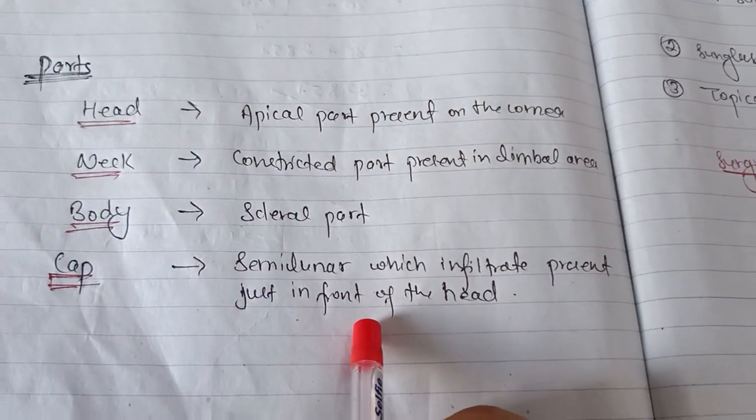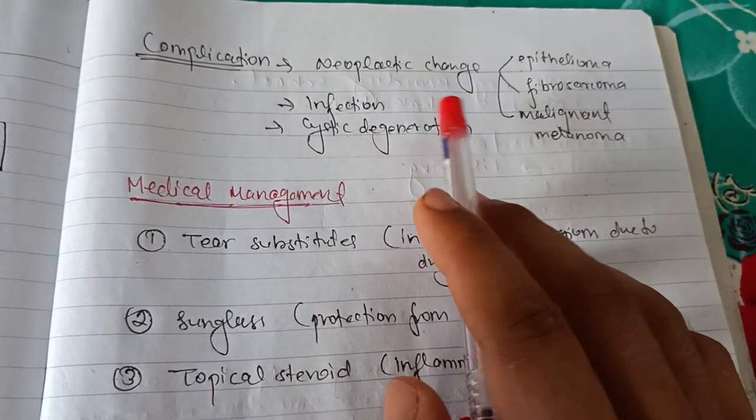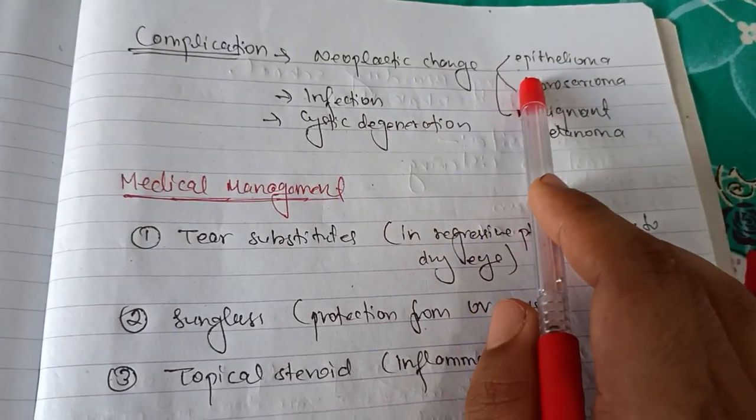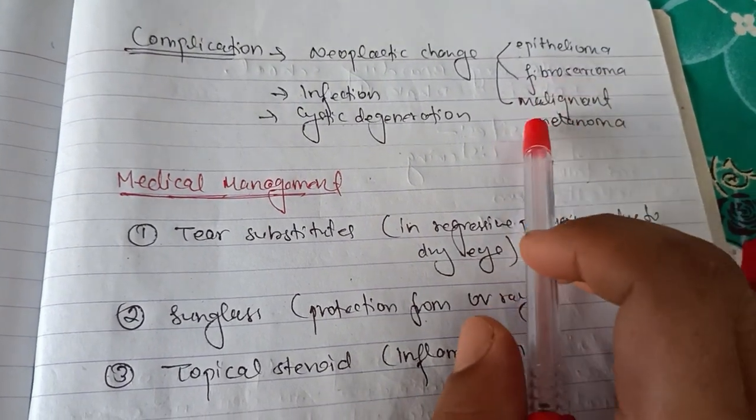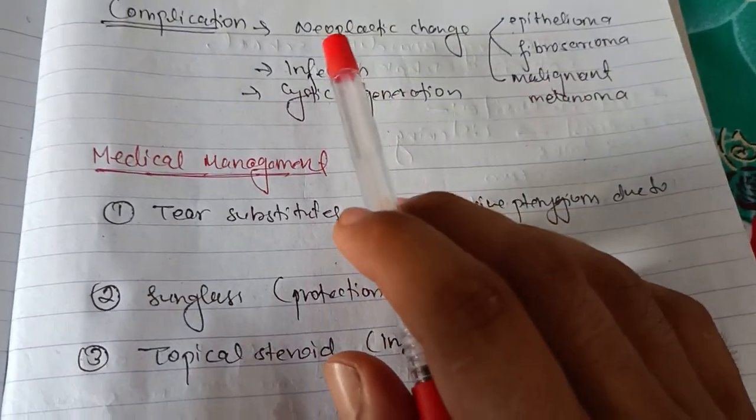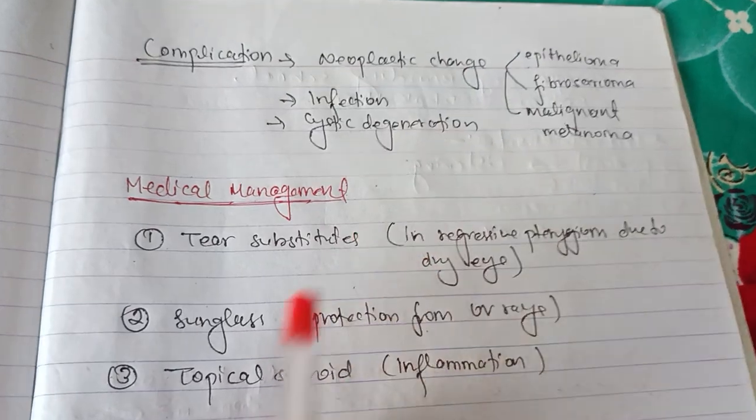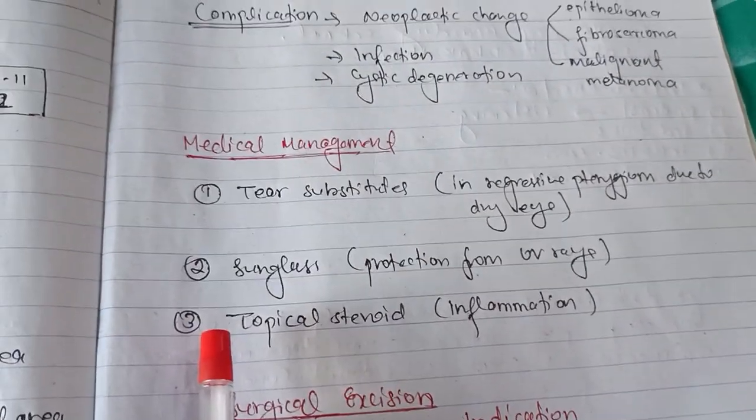Talking about complications: there may be neoplastic changes such as epithelioma, fibrosarcoma, and malignant melanoma. There may be infection and cystic degeneration.